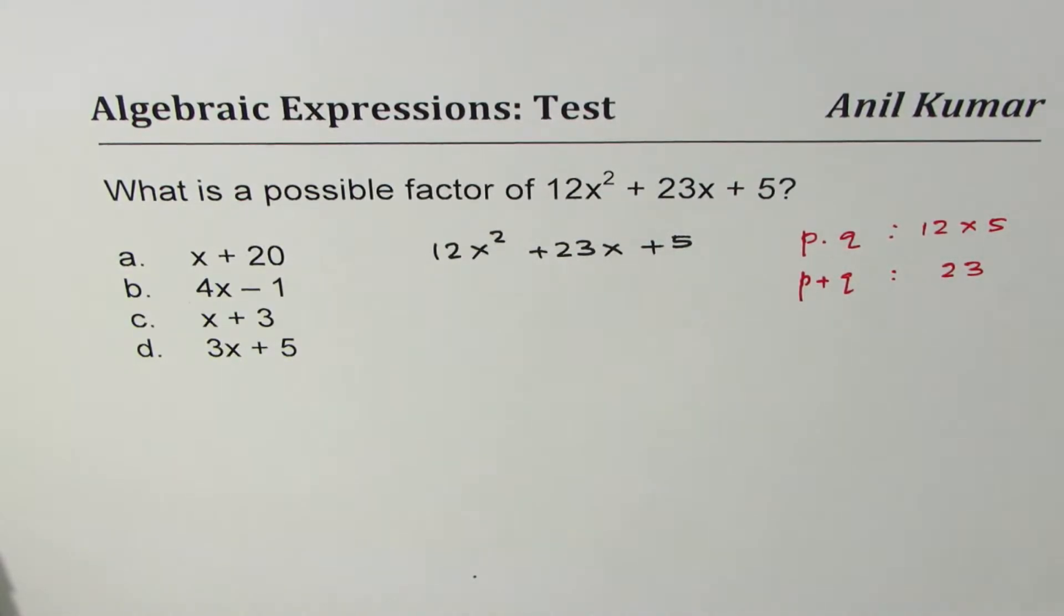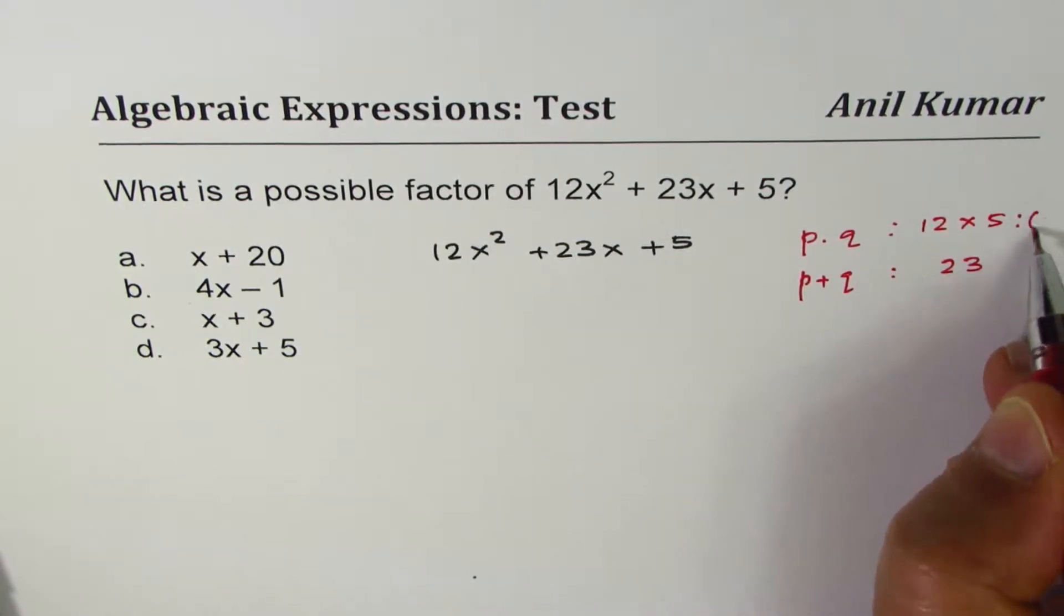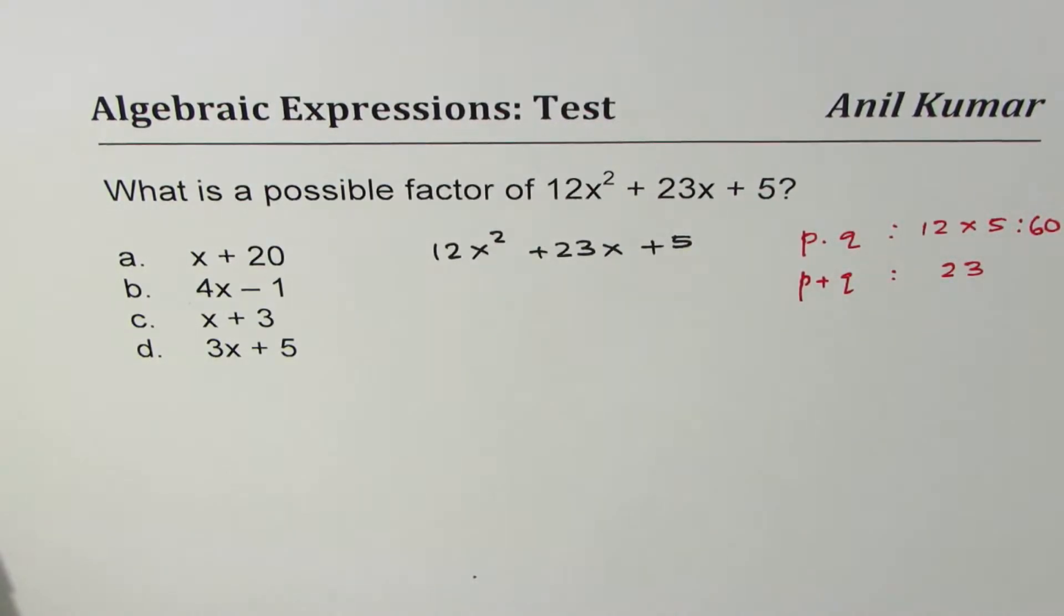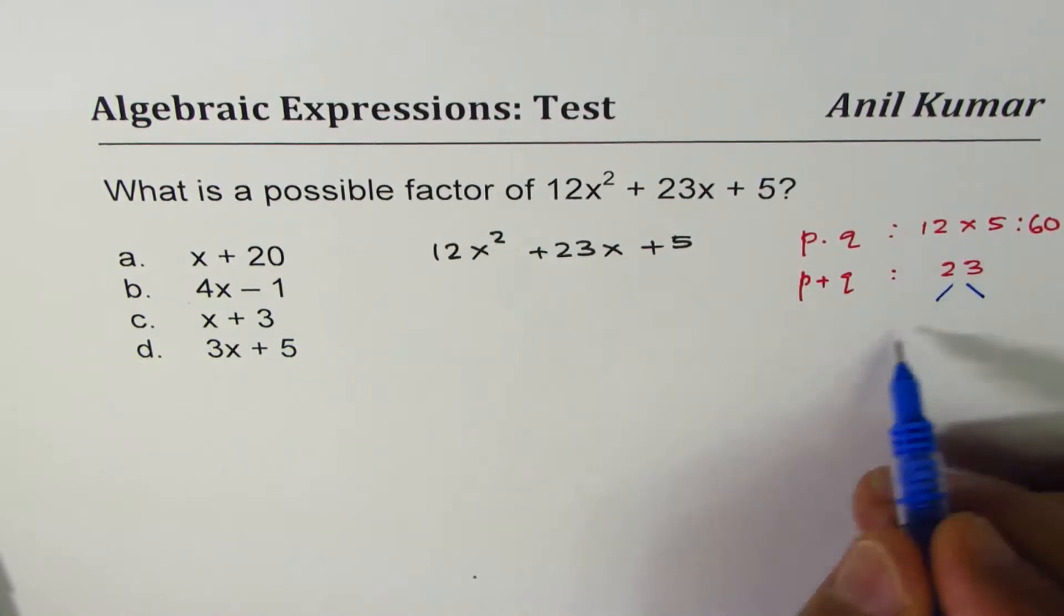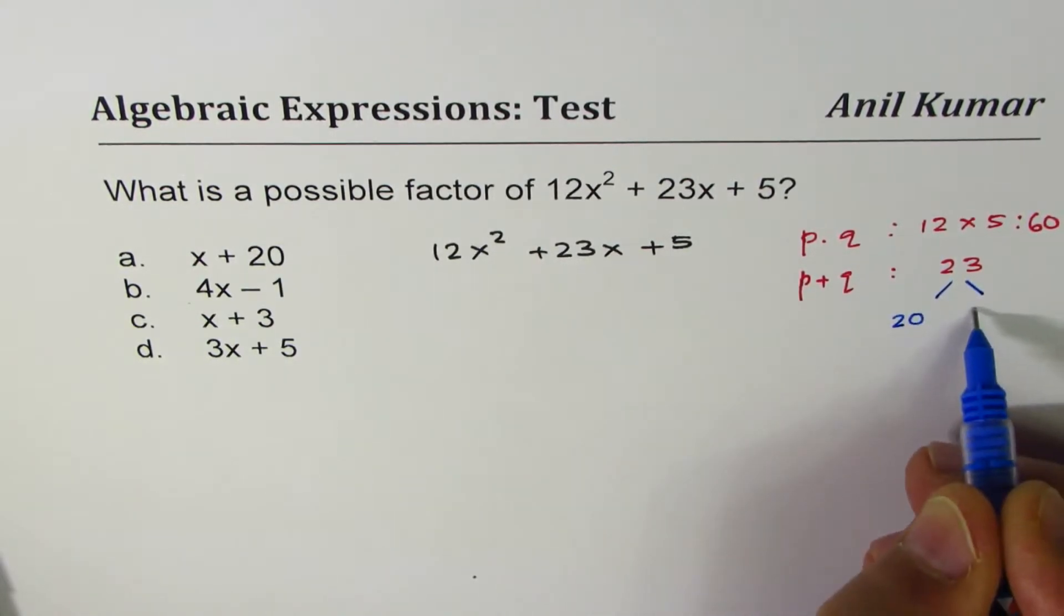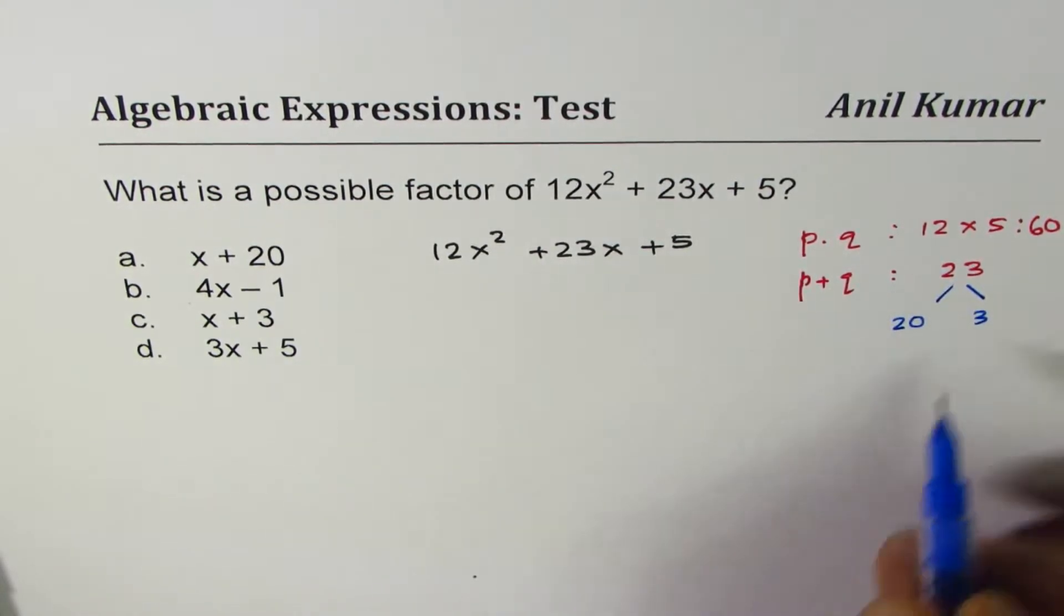So the product is 12 times 5 which is 60. Both are positive and the sum is 23. So the two numbers could be 20 and 3. When you add them, you get 23. When you multiply them, you get plus 60.